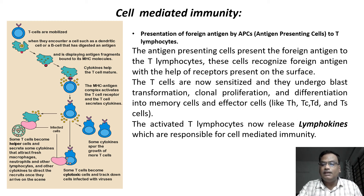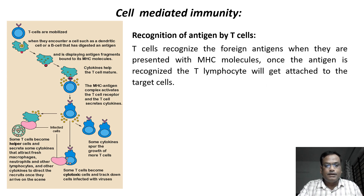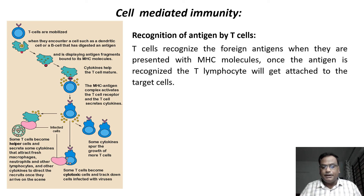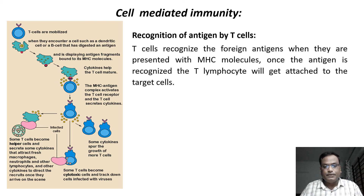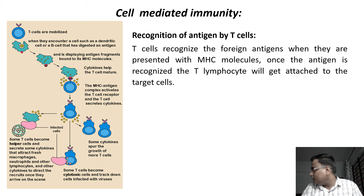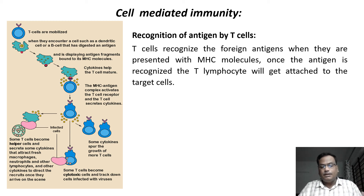The major difference between humoral and cell mediated immunity is: in humoral mediated immunity, B cells are involved, producing antibodies; in cell mediated immunity, T cells are involved. T cells recognize foreign antigens when they are presented with MHC — major histocompatibility complex — molecules, about which we will study in another session.